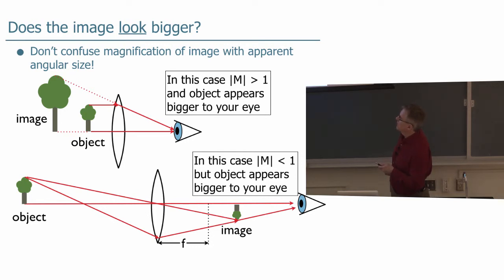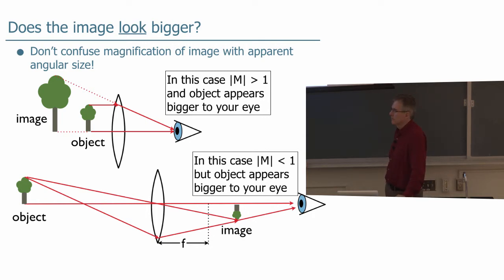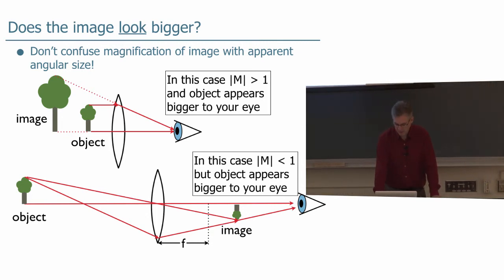Contrast that with this situation where the magnitude of M is less than 1. With the object far away, it would look smaller to your eye because it's much farther away — but the image is close, and even though the image is close and small, it looks bigger to your eye. When you look through binoculars or a telescope at a distant object, it looks bigger because it has a bigger angular size, even though the actual image is quite small inside the binoculars or telescope. You won't be calculating the angular magnification because that's a much more complicated thing to do.